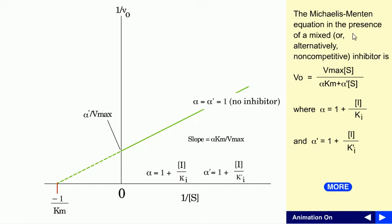In this mixed type of inhibition — alternatively called non-competitive inhibition — the equation is V0 equals Vmax times S divided by α·Km plus α'·S. In normal competitive inhibition, only Km is multiplied by α. In uncompetitive inhibition, α' multiplies the substrate concentration. But in mixed inhibition, α multiplies both Km and the substrate concentration.